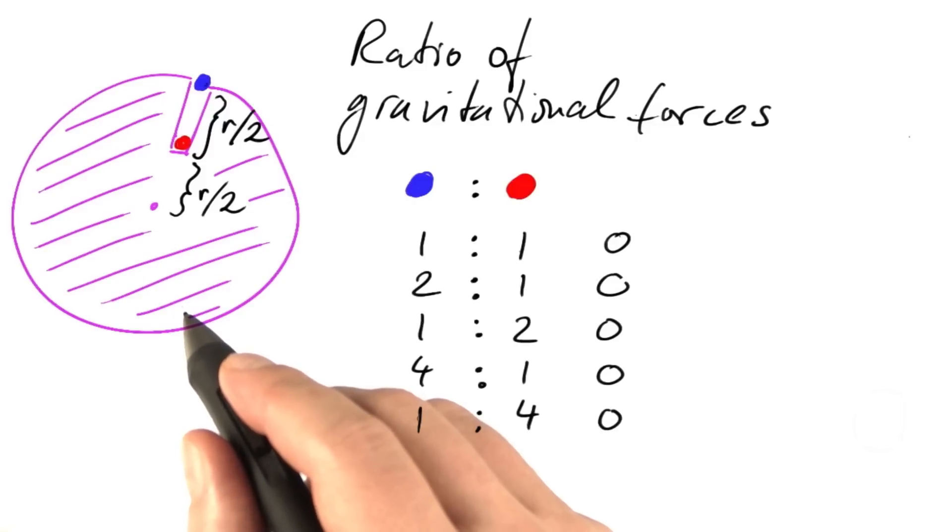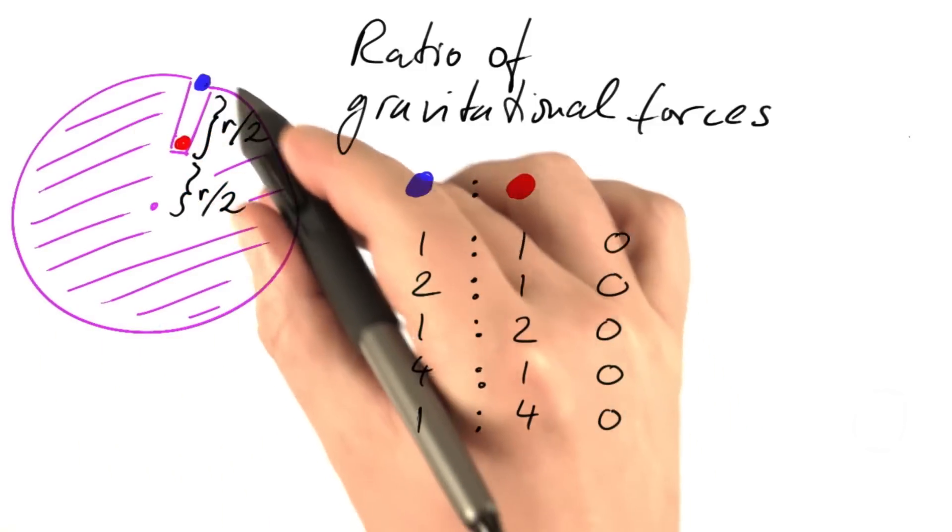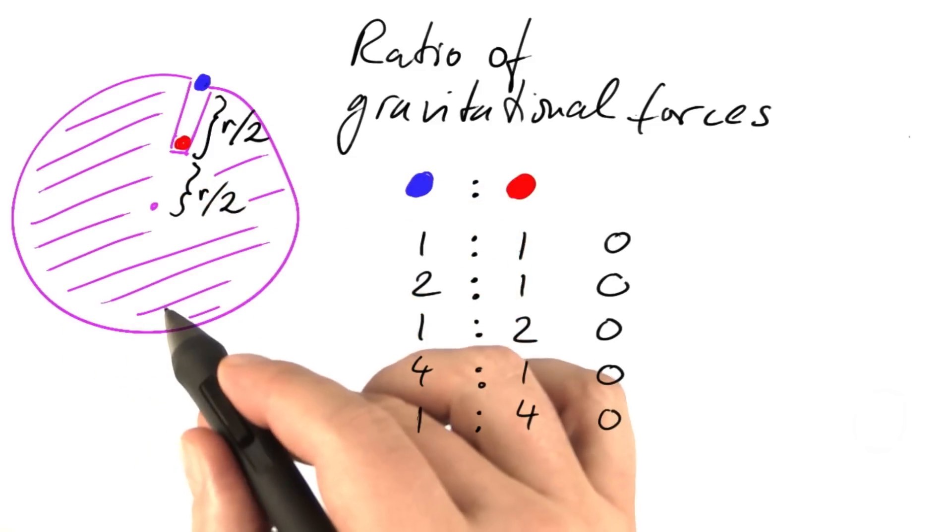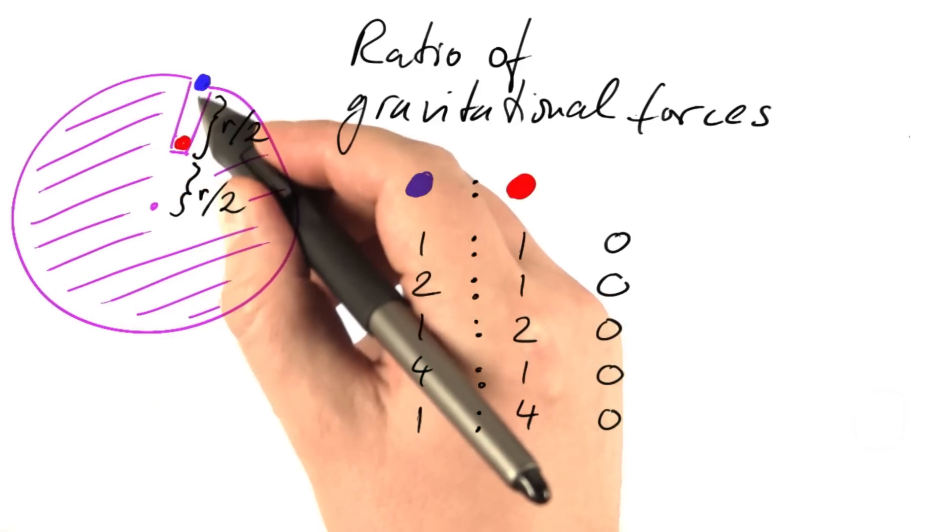With the help of this analogy between gravity and water, analyze this case. A huge spherical object of constant density in which we drill a hole that's half the radius deep.